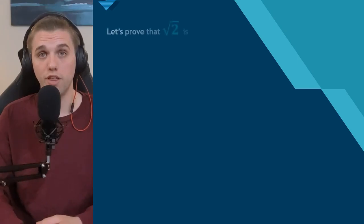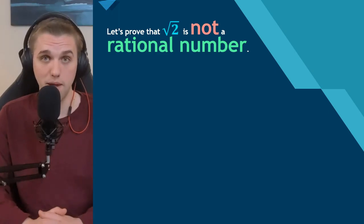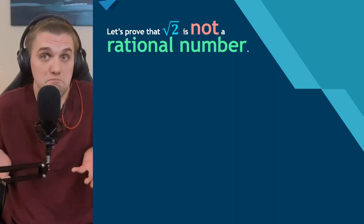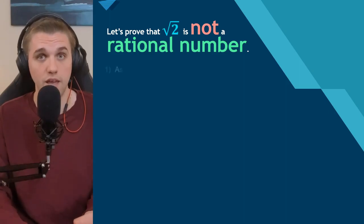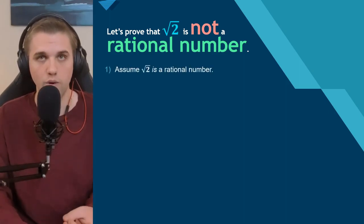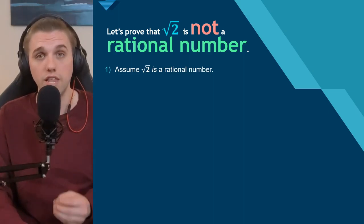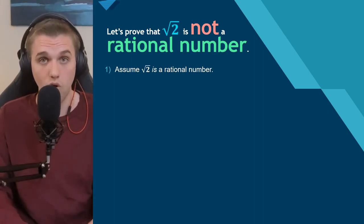Now that we've covered everything I wanted to discuss, I want to prove the claims I made earlier. First, we're going to prove that the square root of 2 is not a rational number. We're going to assume that the square root of 2 is a rational number — the only assumption we make — and lead ourselves into a contradiction, which would mean our assumption is wrong.